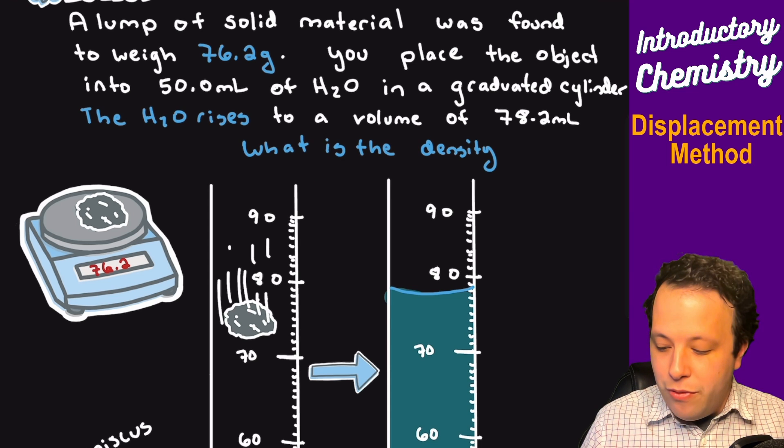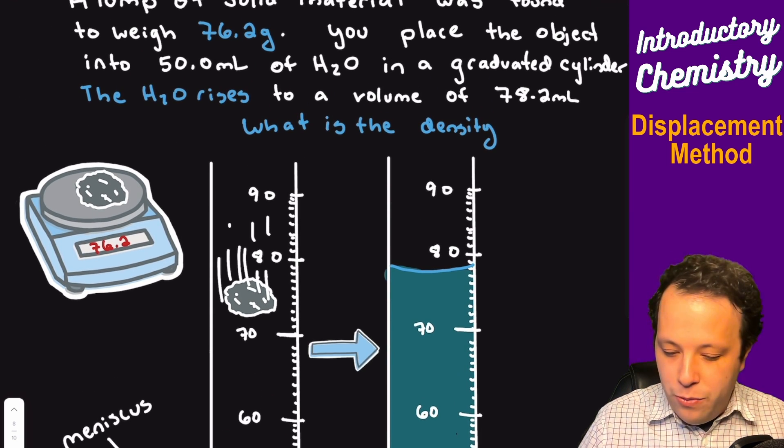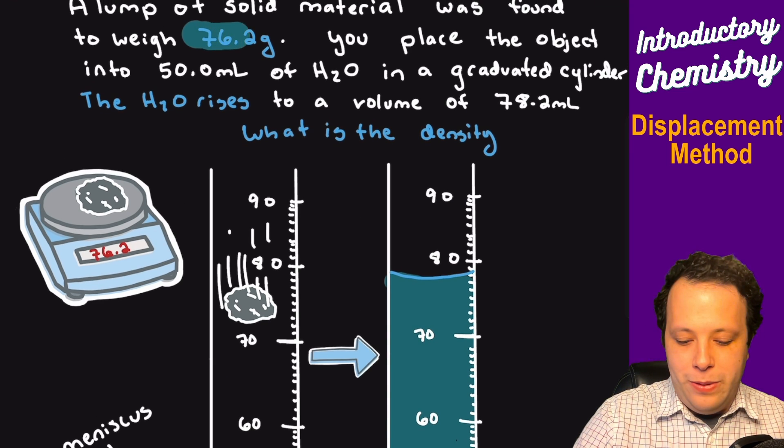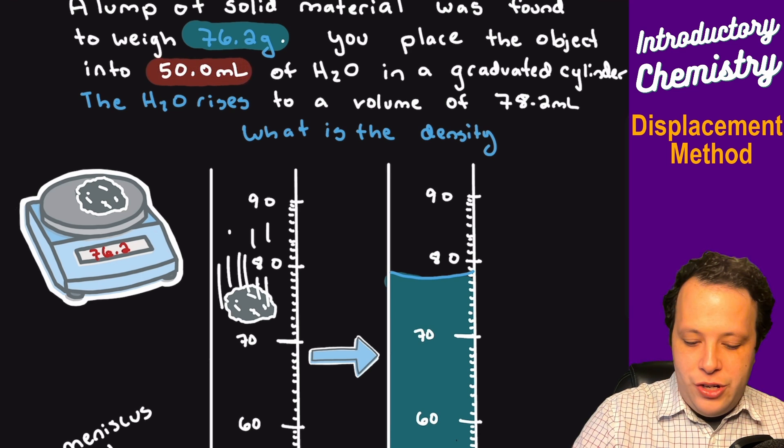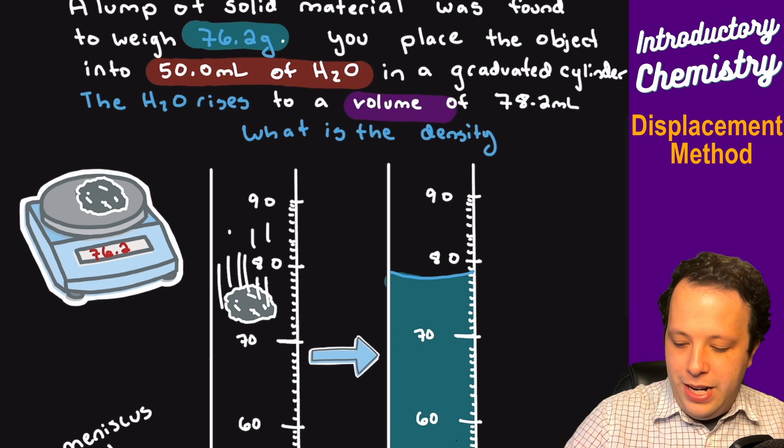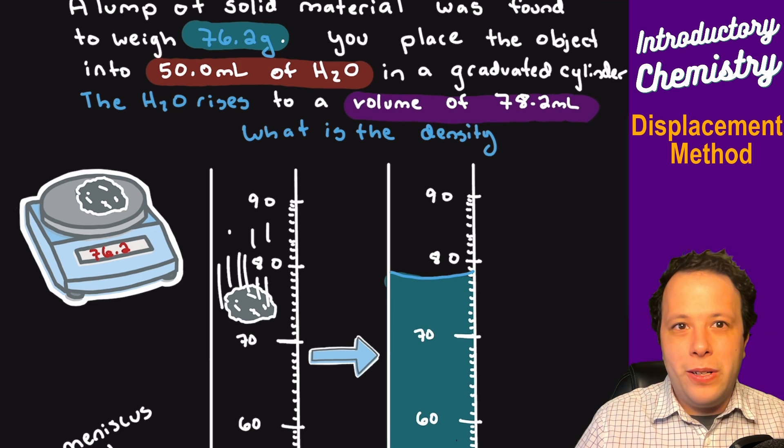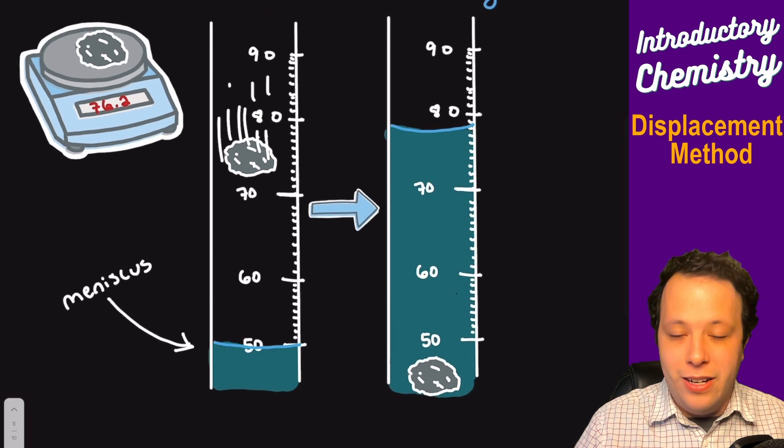Let's go through this type of problem. The first thing you want to do is identify what all the important pieces of information are. The first thing you saw was okay we had a mass, we had an initial volume of water, and then we had a final volume of water in the problem. So what we're going to do now is write all those down for ourselves so we can solve our problem.